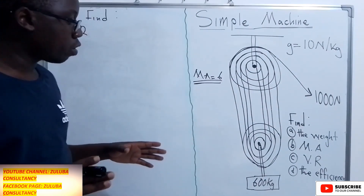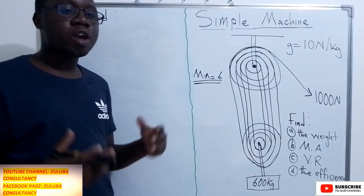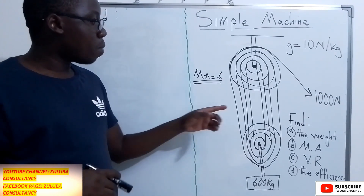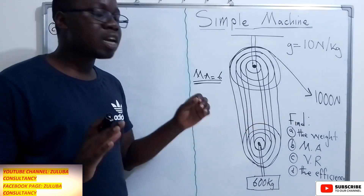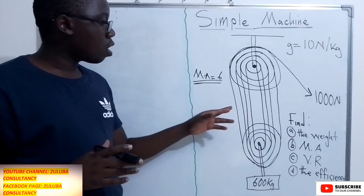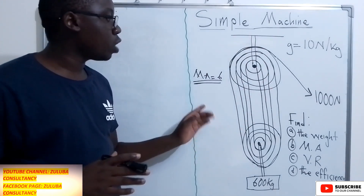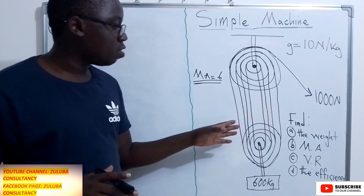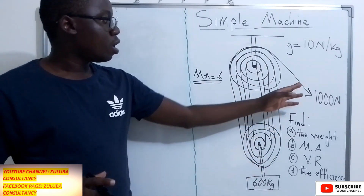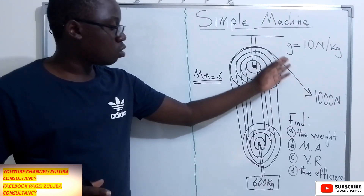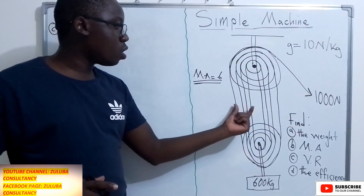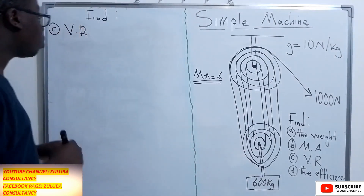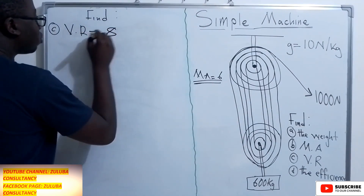The third question is asking us to calculate the velocity ratio, which is VR. The velocity ratio in a pulley system is found by counting the number of lines connected to the moving pulley. In this diagram, we have 1, 2, 3, 4, 5, 6, 7, 8 lines connected to the moving pulley. This last line is not counted because it is not connected to the moving pulley. So we only have 8 lines, and the velocity ratio for this pulley system is equal to 8.